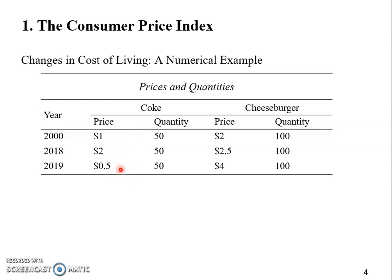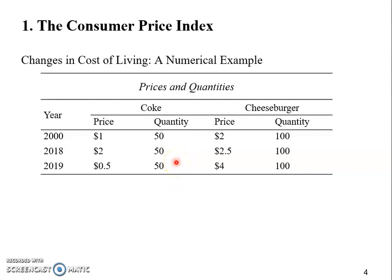The prices can change over time — for example, the price of Coke goes from one dollar to two dollars in 2018 and 50 cents in 2019. The price of cheeseburgers is two dollars in 2000, two dollars and a half in 2018, and four dollars in 2019. It varies across time, but the quantities of Cokes and cheeseburgers stay the same, because if the quantity also varies it would be hard for us to focus just upon the change in price. We want to measure the cost of living.